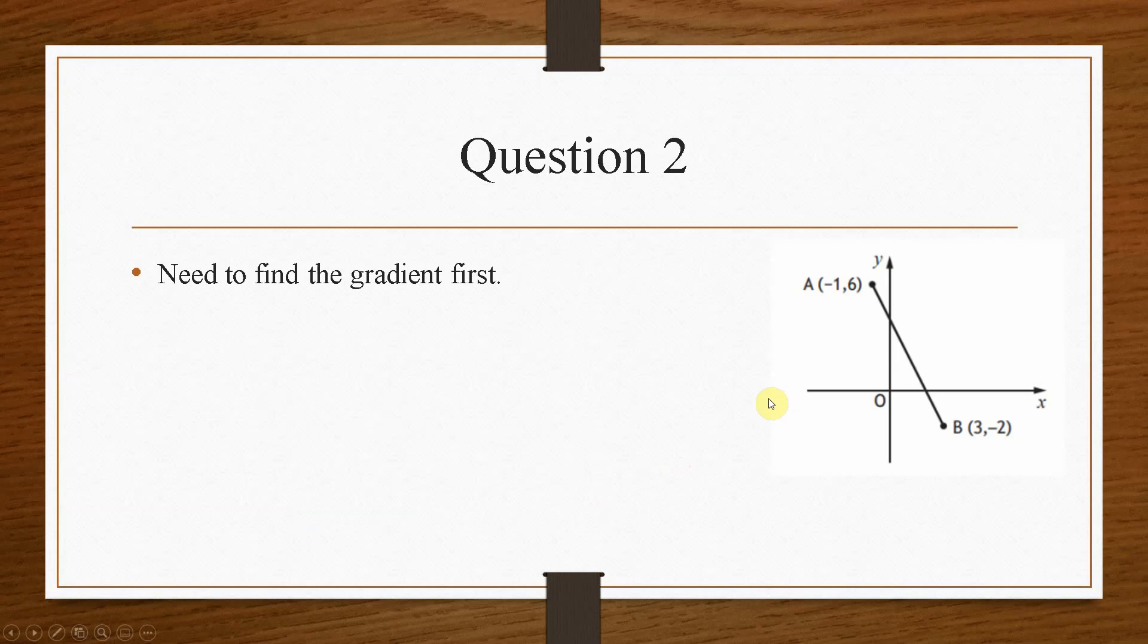So we need to find the gradient first, and we do this using this equation here. So we use A and B, and we use y2 minus y1 over x2 minus x1. Now I'll put a link in the description below on a video on how to solve gradient problems. But if we substitute the numbers in, we end up with a gradient of minus 2.